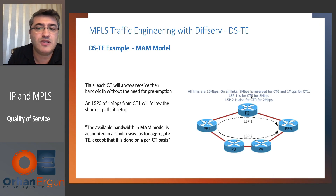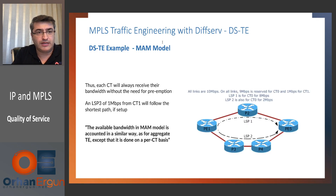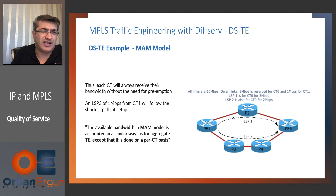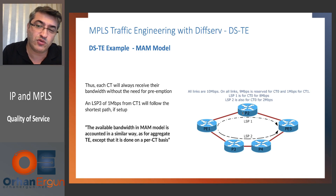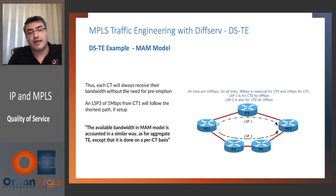MAM model, as well as Russian doll, is always per-class, so CT-based. We can map, for example, CT0 to data and CT1 to voice LSP. If a 2 MB CT1 request comes, it cannot be signaled on either link because CT1 is limited to 1 MB per link. We can signal 1 MB CT1 on the top path and 1 MB CT1 on the bottom path, but we cannot do 2 MB CT1 on one path. CT1 is limited to 1 MB on each and every link.